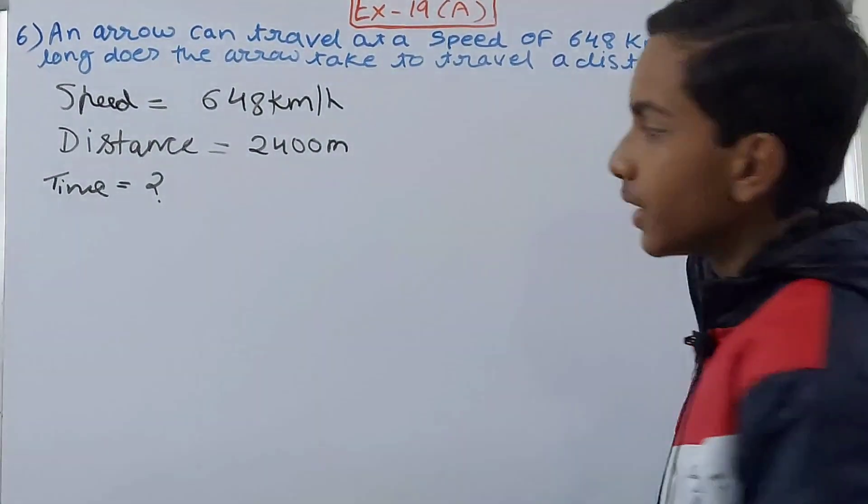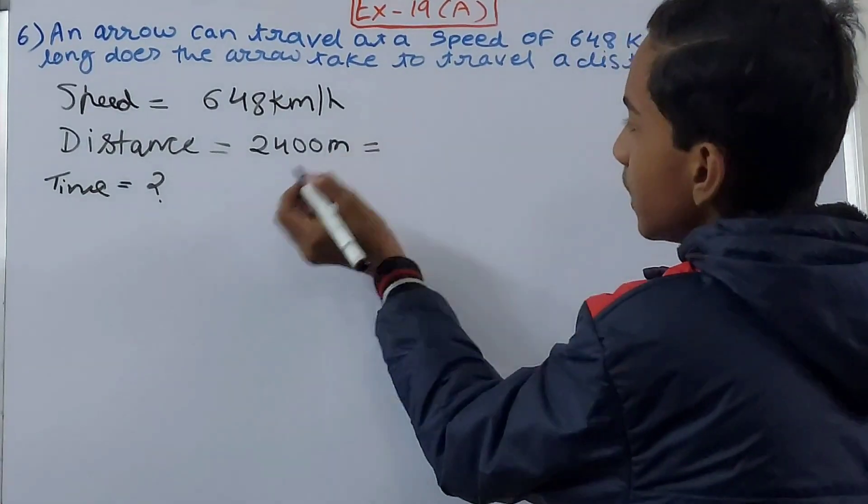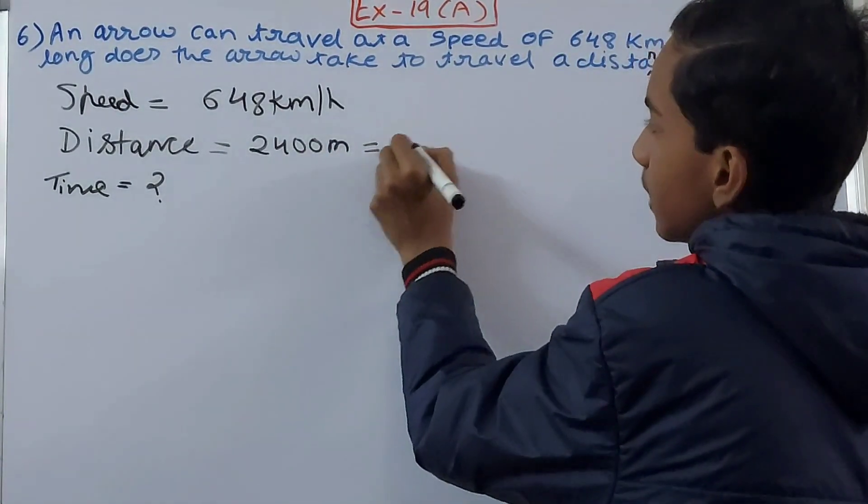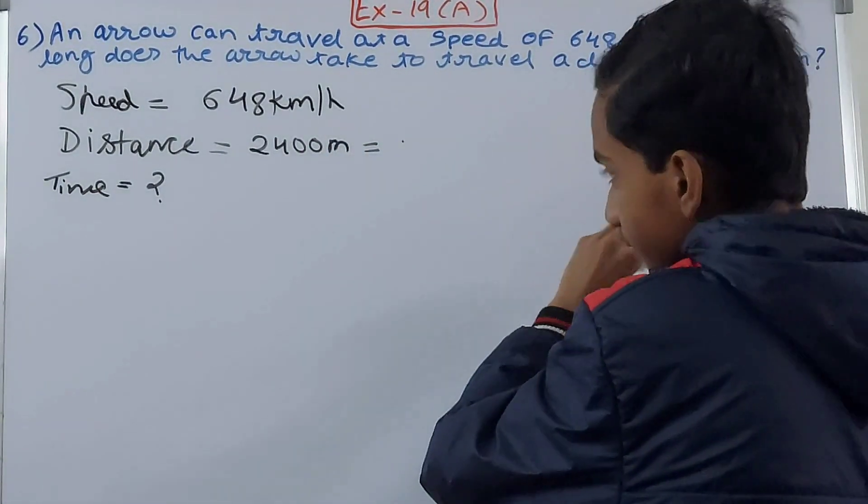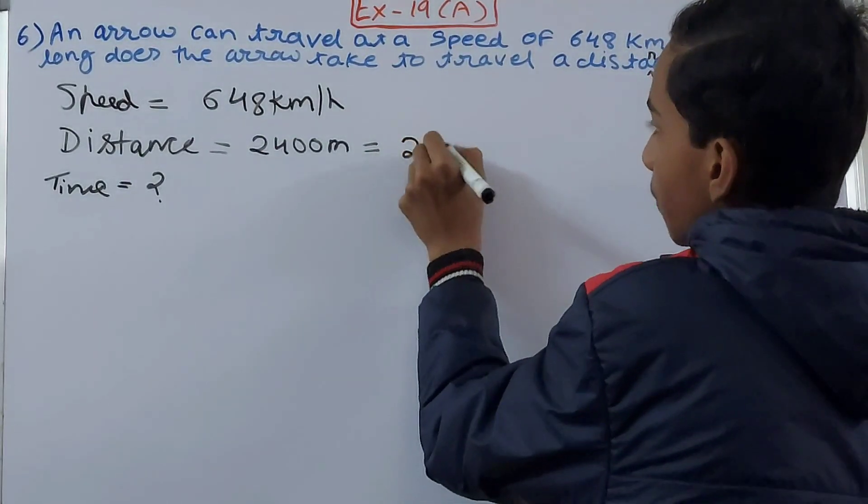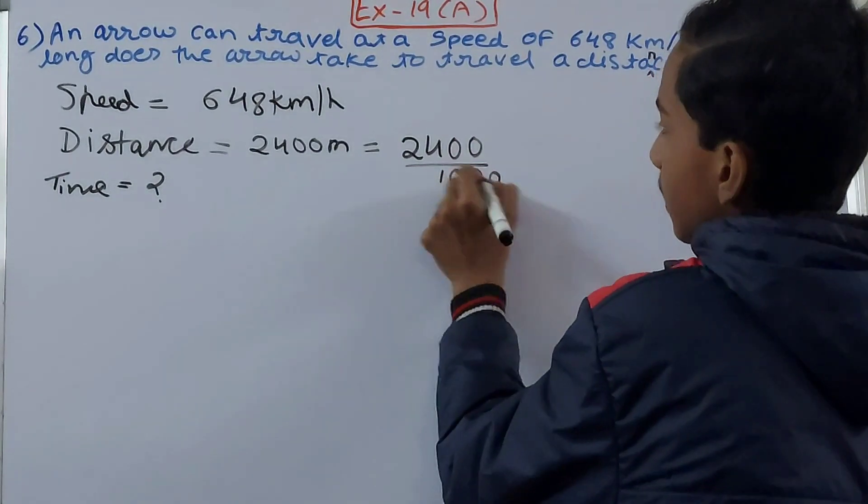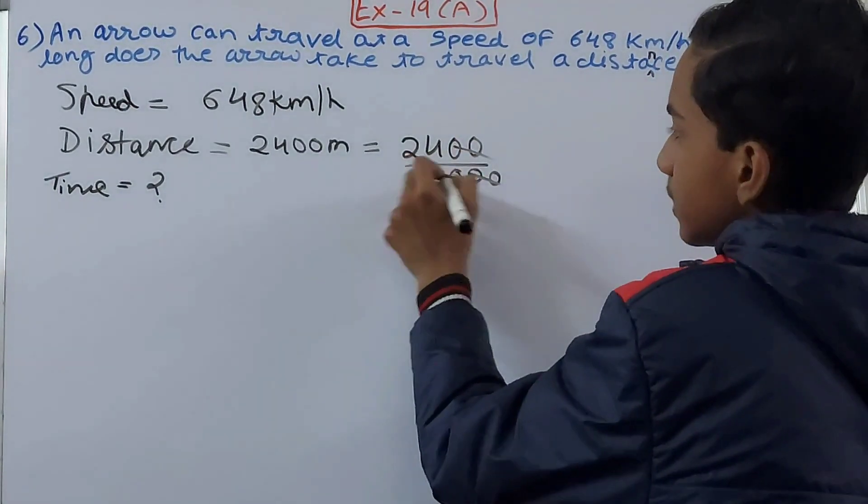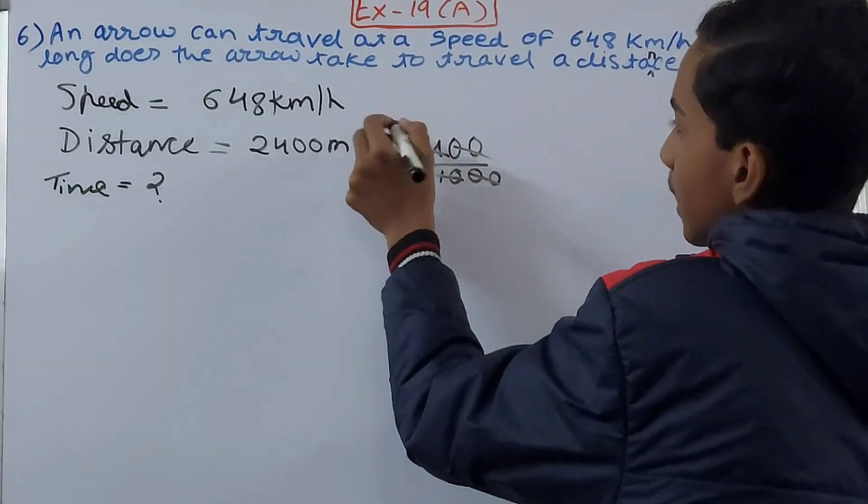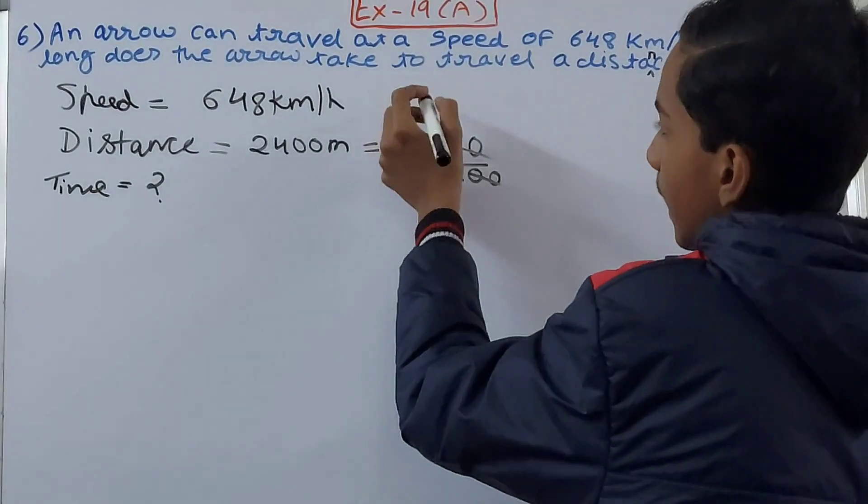So I'll convert 2400 meters into kilometers. This becomes 2400 upon 1000. These two zeros get cut, this and this cancels, one, two point and four. So we get here 2.4 kilometers. This becomes our distance.